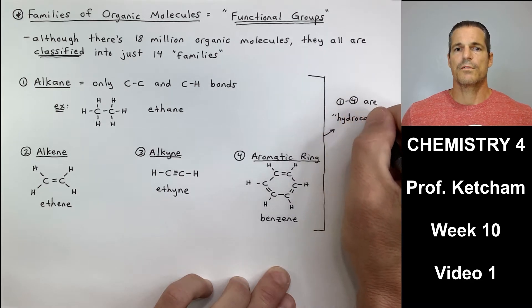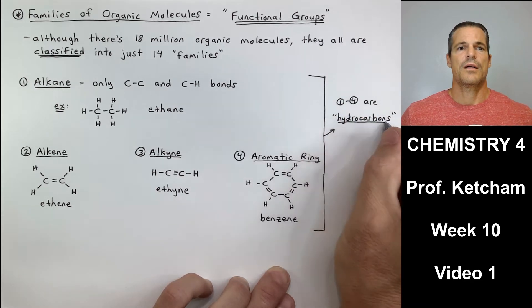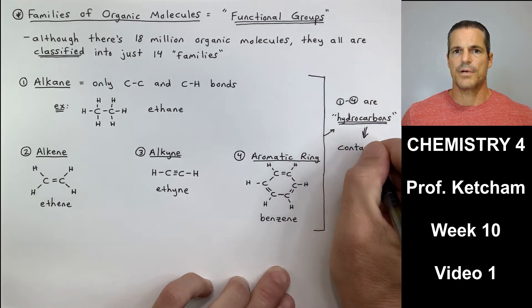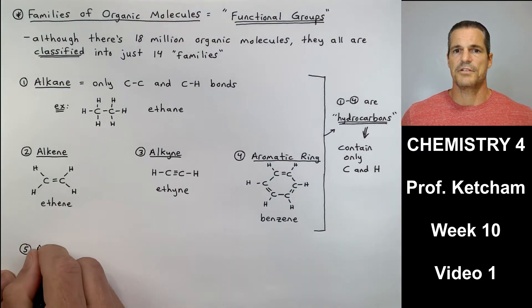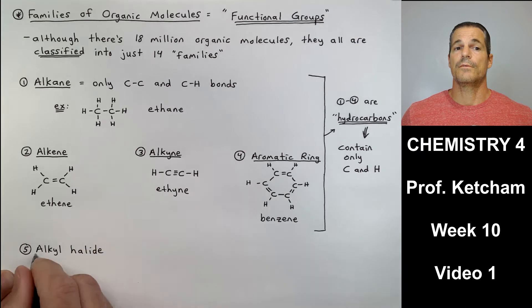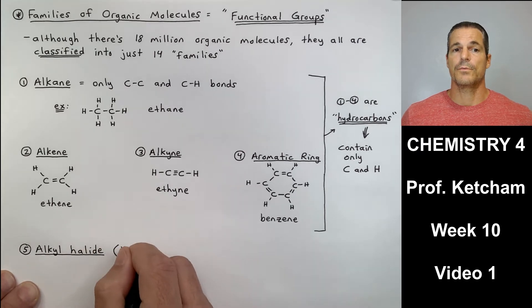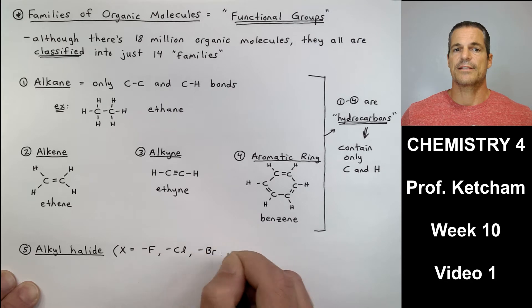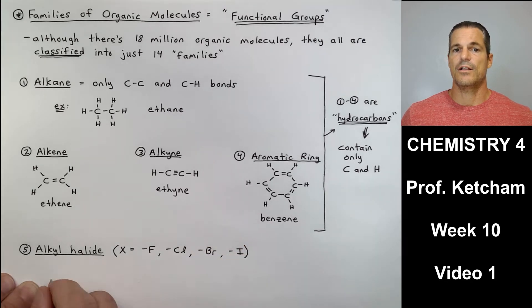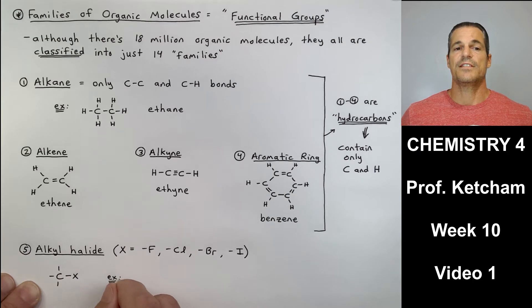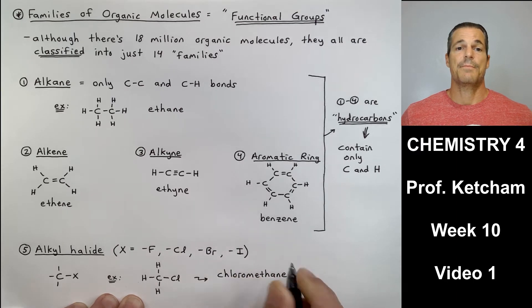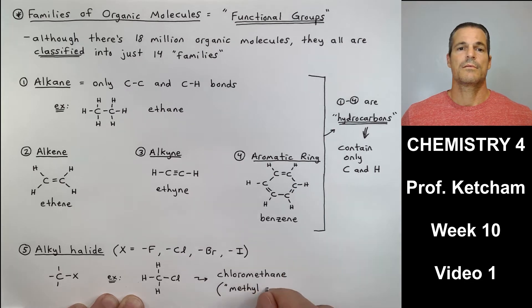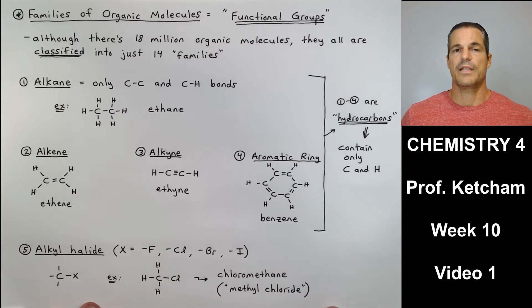Number five is alkyl halide, where X can be any halogen — F, Cl, Br, or I. If you have a carbon single-bonded to a halide, you have an alkyl halide. The example is chloromethane, also called methyl chloride. Number six are alcohols — a carbon single-bonded to an OH group. The example is methanol.